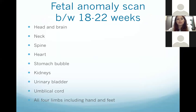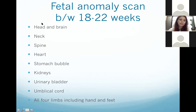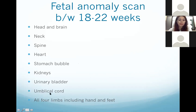The most important second trimester scan is the fetal anomaly scan, where we evaluate if there is any anomaly within the fetus. The structures assessed systematically from top to bottom are: the head and brain, neck, spine, heart with four chambers, stomach bubble — very important to rule out esophageal atresia and other abnormalities — kidneys, urinary bladder, and all four limbs including hands and feet.